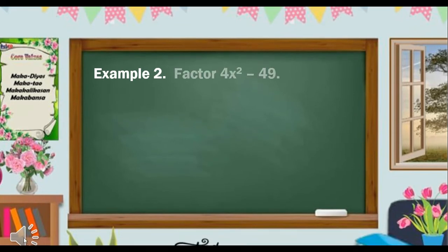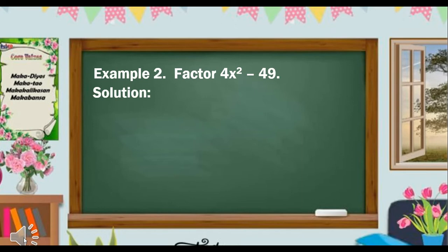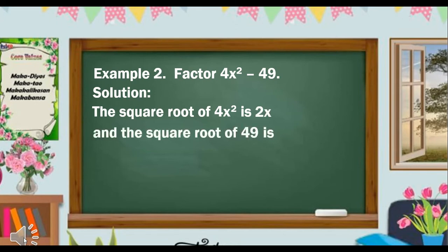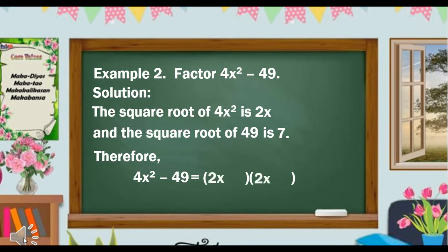Example 2: factor 4x squared minus 49. Just like the previous example, we check the pattern first. Two terms — check. First and last terms are perfect squares — check. The operation is subtraction — check. Therefore, we can now start factoring. The square root of 4x squared is 2x and the square root of 49 is 7. Therefore, 4x squared minus 49 is equal to (2x plus 7) multiplied by (2x minus 7).